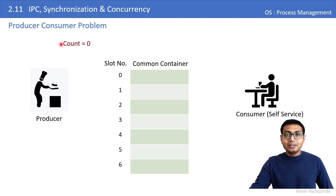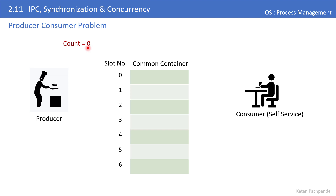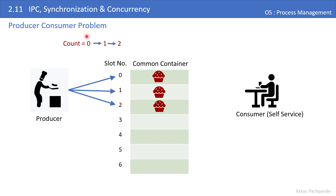To implement this, we use a counter — like an electronic display showing the number of items in the container, initialized to 0. As the producer produces items the counter increments: first item → count 1, second → count 2, and so on to five. When the consumer arrives and takes an item, it decrements the count to four. The producer and consumer continue working concurrently, with the count fluctuating accordingly.